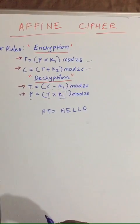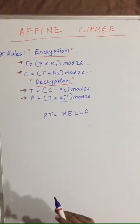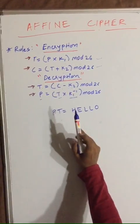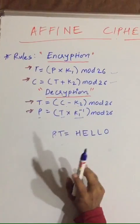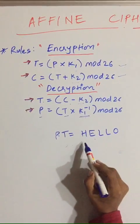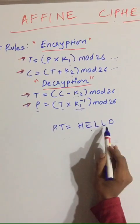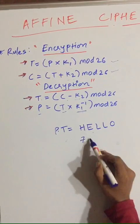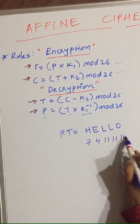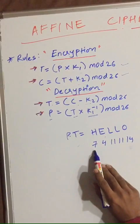Hello friends, in this lecture you will learn about affine cipher. There are four basic rules in affine cipher: two for encryption and two for decryption. First, if you have the plain text, write the corresponding value of all the letters. For H is 7, E is 4, 11, 11, and 14.